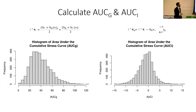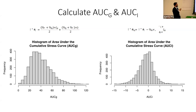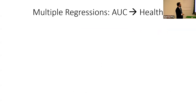The next step is to calculate AUCG and AUCI. When you calculate area under the curve with respect to ground and increase, you get roughly normal distributions, which is handy as it allows us to rely on standard parametric statistics — simple linear regressions without worrying about robust estimators. Then, for the multiple regressions to conduct the battle of the predictors, we have five focal predictors: the continuous composite index, cumulative risk exposure index, random linear slope, AUCG, and AUCI.